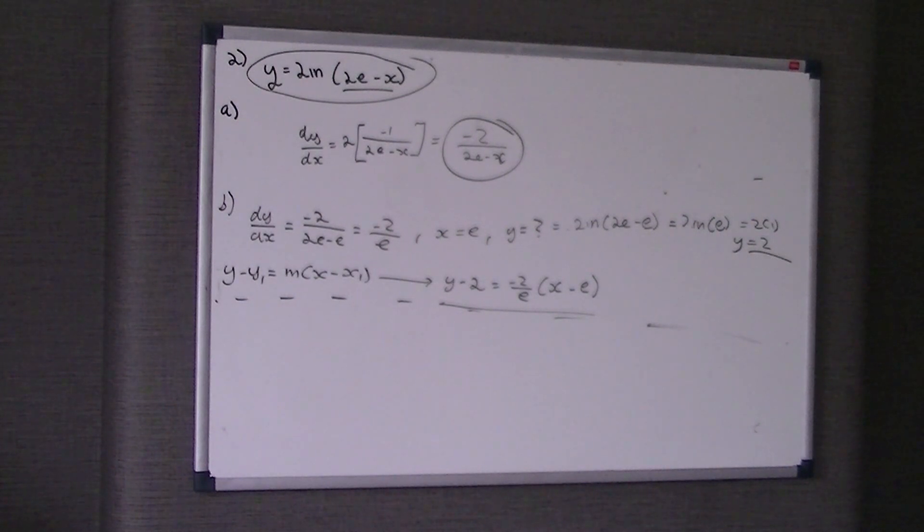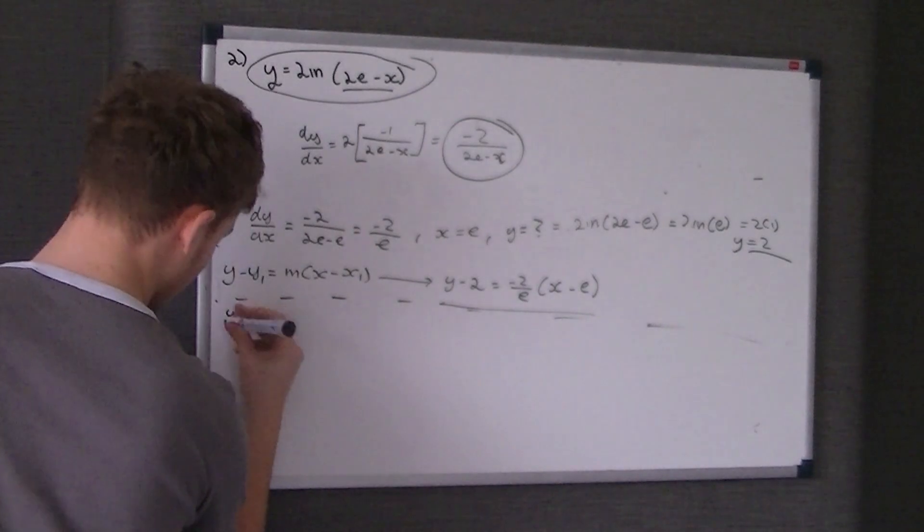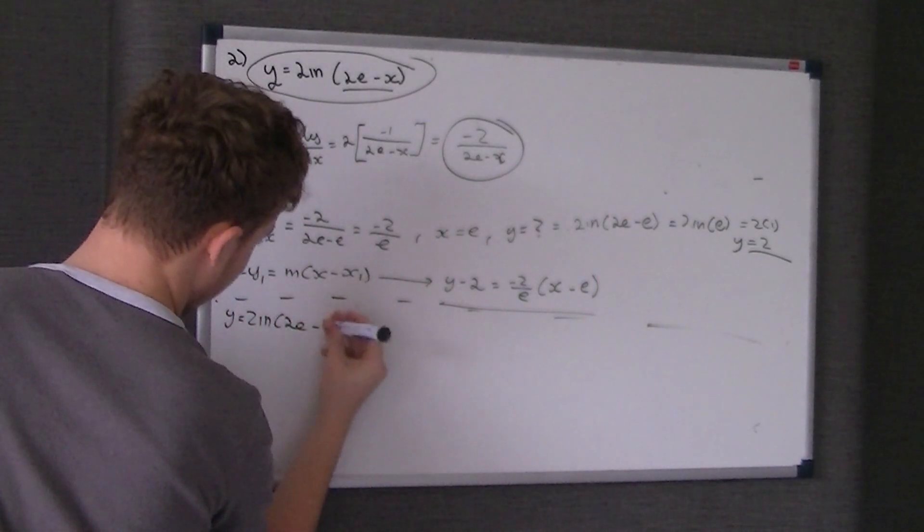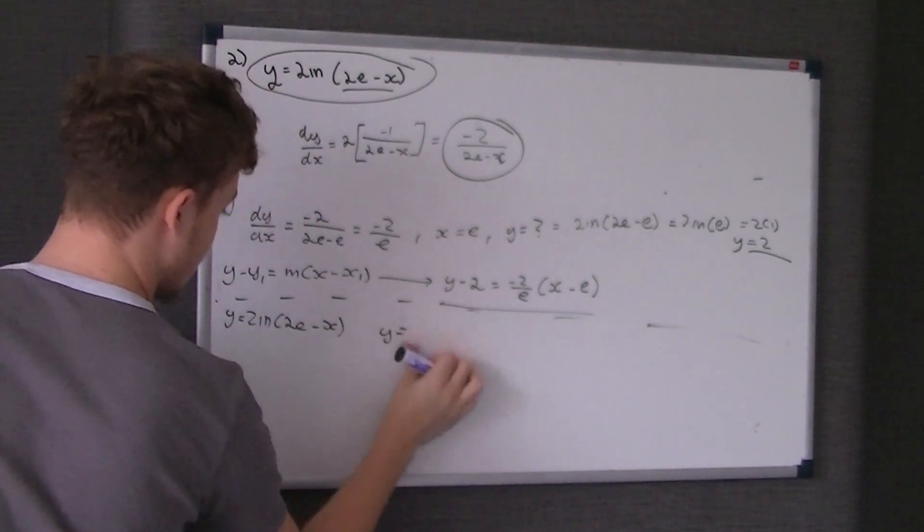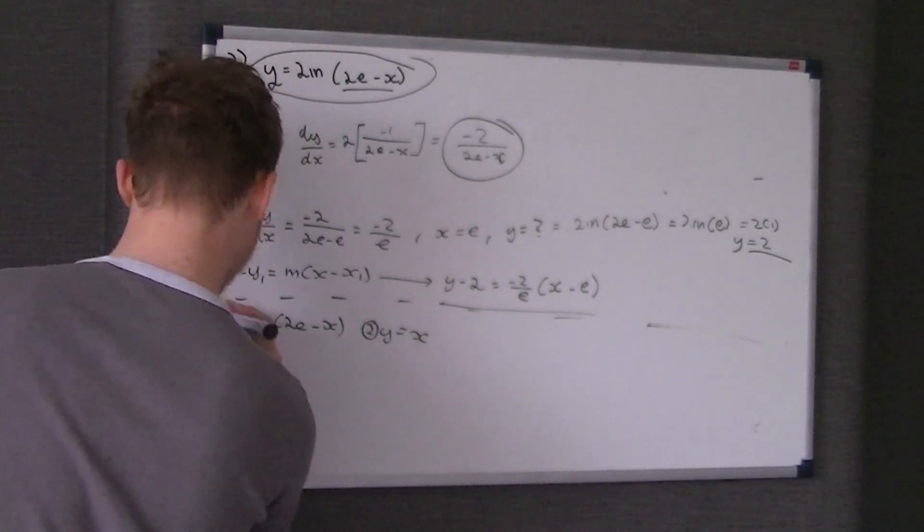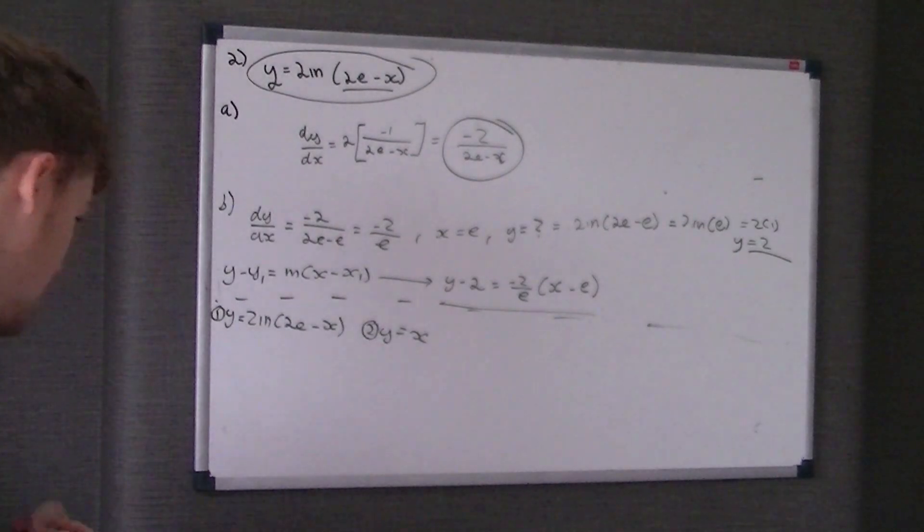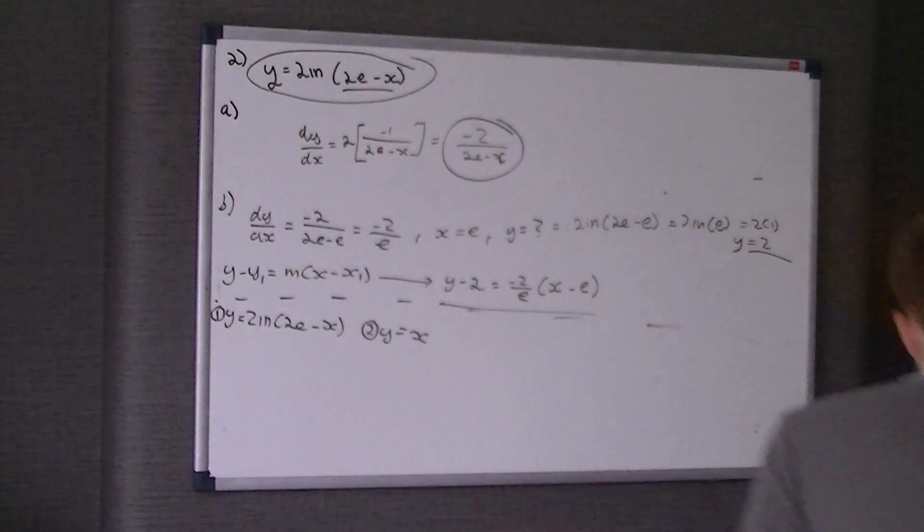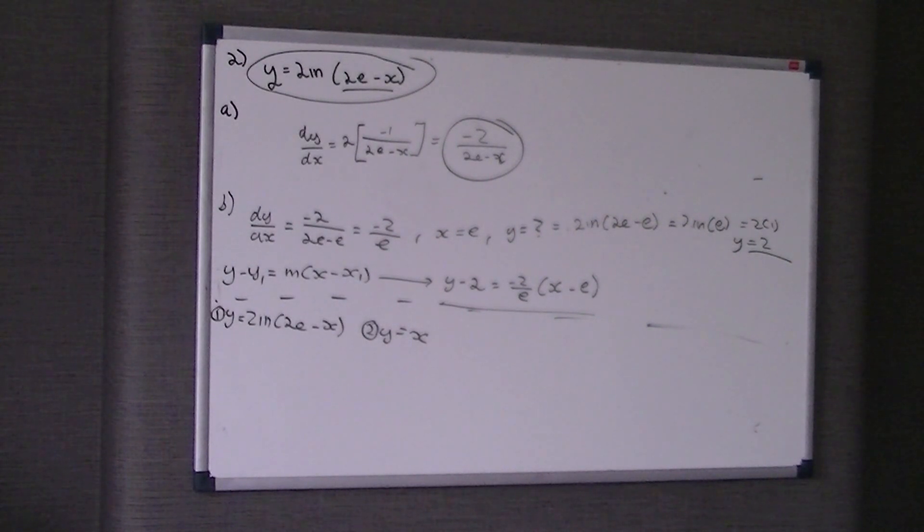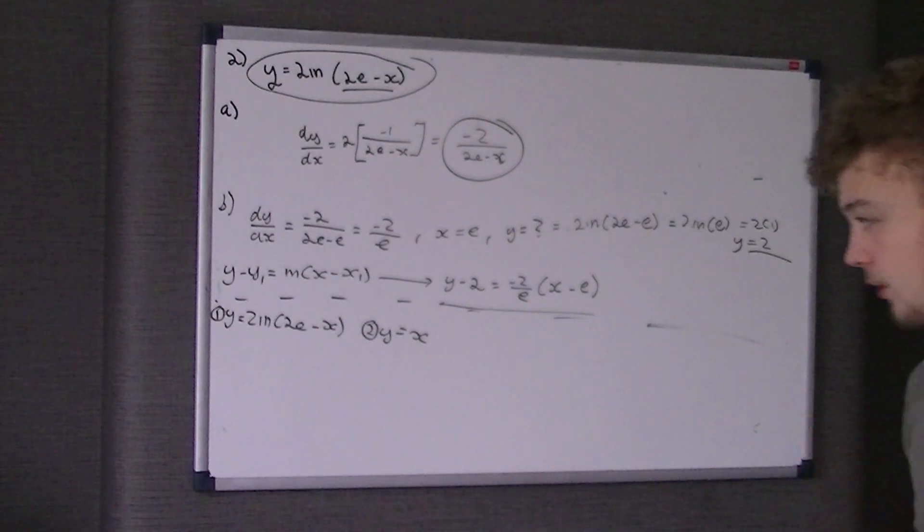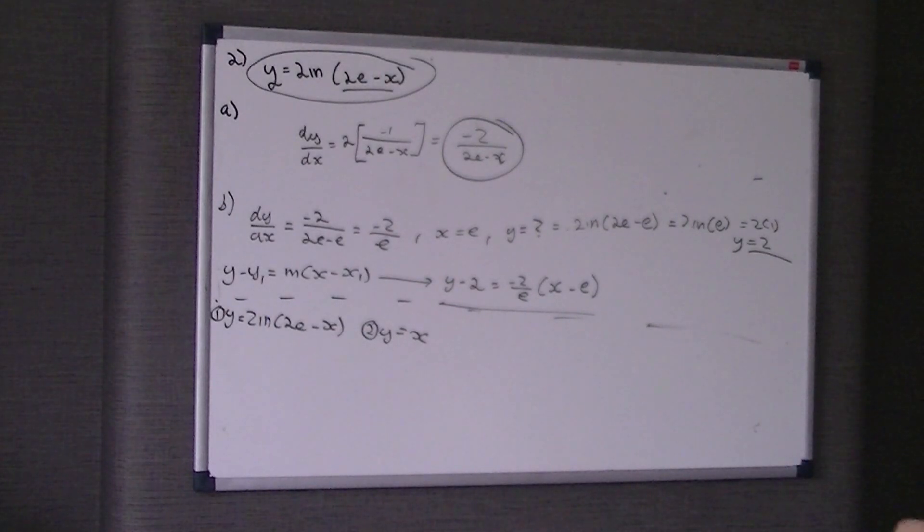The curve intersects with the line y equals x at a single point where x equals a point we have to find out. So we've got two curves here, y equals 2 ln of 2e take x and y equals x. These are two curves that we're told intersect at the point where x equals a. We're told to prove that it lies between 1 and 3.